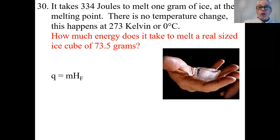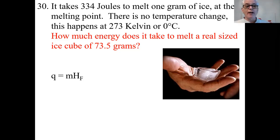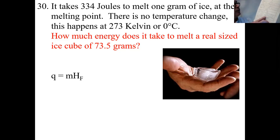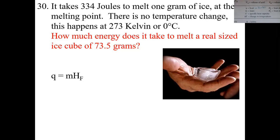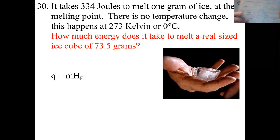This formula works in two directions — melting or freezing — and the amount is the same either way. What do these letters mean? Q is equal to the heat — write 'in joules.' M is mass — write 'in grams.'